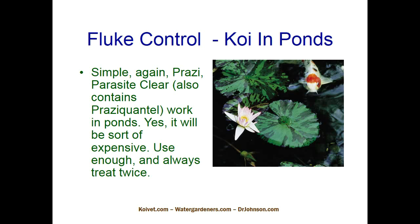For koi in ponds, you can use other compounds. Flukes will be controlled with serial application of formalin/malachite green. It takes a little bit more formalin than most published doses, so you kind of have to make it up as you go along. It helps to have a microscope when using formalin/malachite to make sure you've got the parasite cleared. In koi ponds that are too large to use praziquantel financially, you might reach for formalin/malachite or potassium permanganate — though potassium permanganate is not by any means my favorite.